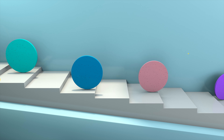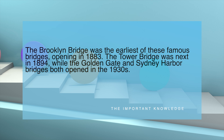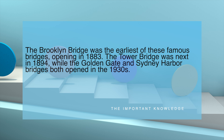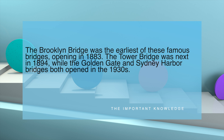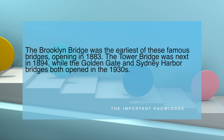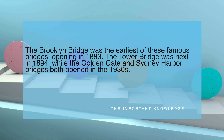The Brooklyn Bridge was the earliest of these famous bridges, opening in 1883. The Tower Bridge was next in 1894, while the Golden Gate and Sydney Harbour bridges both opened in the 1930s.